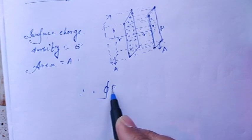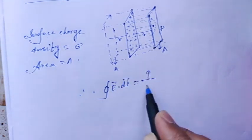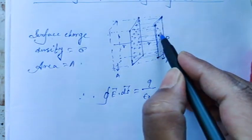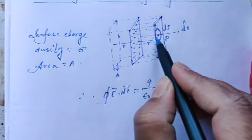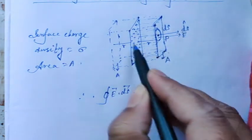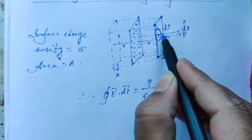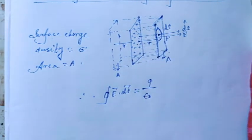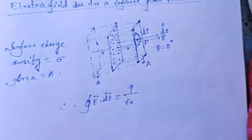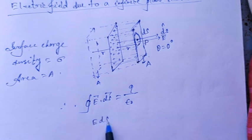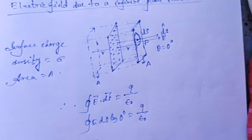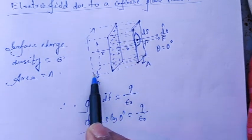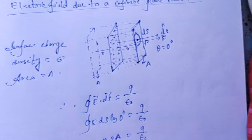Now apply Gauss's theorem: the integral of E dot ds equals q by epsilon naught. This is the formula. Now we consider a small area ds. The area vector ds will be along this direction. Electric field is also along the same direction because it is positively charged — the electric field lines go outward and are perpendicular to this surface. Therefore the angle theta between these two is 0 degrees. Therefore E dot ds means E ds cos(0°) = q/ε₀. Since E is constant, we take it outside the integral, giving E times 2A.